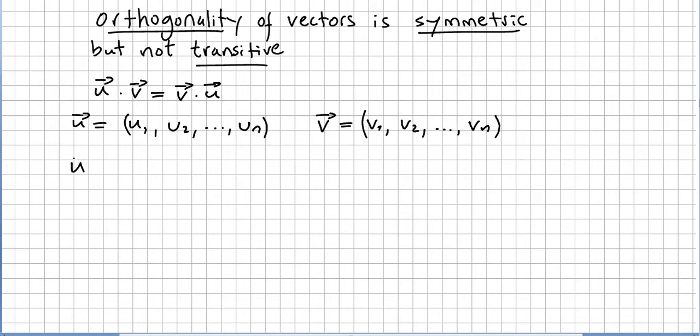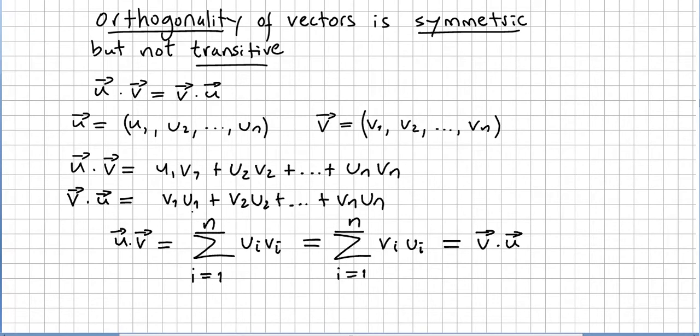So u·v will be u1 times v1 plus u2 times v2, and so on, plus un times vn. And what is v·u? Well, v·u will be v1 times u1 plus v2 times u2, and so on, plus vn times un.